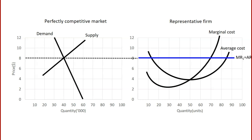What's the optimal amount this firm will produce, assuming its entrepreneur is a profit-maximizing rational agent? The rule is that the optimal output is the quantity where the marginal revenue of the last unit produced and sold equals the marginal cost of the last unit produced and sold — that is, where the marginal revenue curve intersects the marginal cost curve. That gives us an optimal output of 70 units, which is the profit-maximizing output.